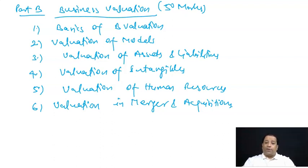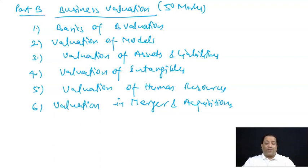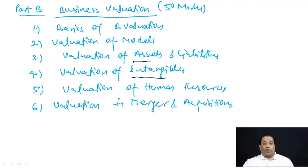Business Valuation का पहला chapter है: basics of business valuation — business valuation क्यों किया जाता है, क्या ज़रूरत पड़ती है। Second chapter: valuation of models — किस तरीके से models को value किया जाता है। Third chapter: valuation of assets and liabilities। Fourth chapter: valuation of intangible assets like goodwill, patent, trademark, brand। Fifth chapter: valuation of human resources — how to value different human resources।